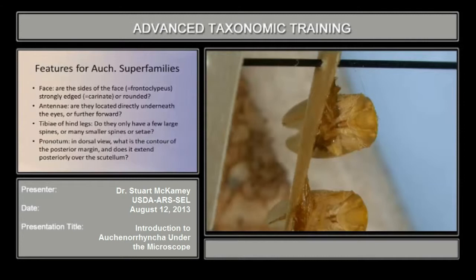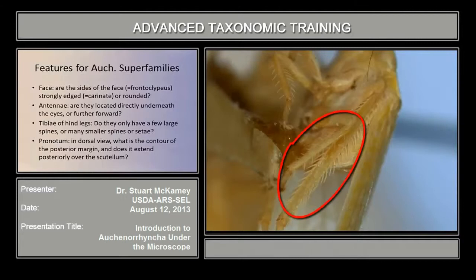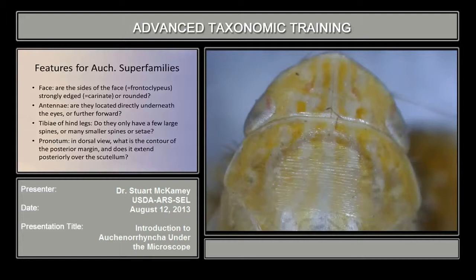The face, often most visible from a ventral view. The antennae, the hind tibia, and the pronotum, which is the dorsal segment behind the head. There's a mnemonic for these, which is FATPIG — F-A-T-P — the face, the antennae, the tibiae, and the pronotum.